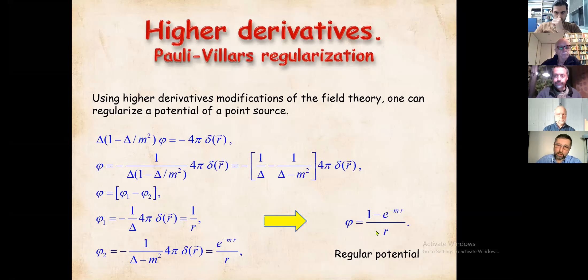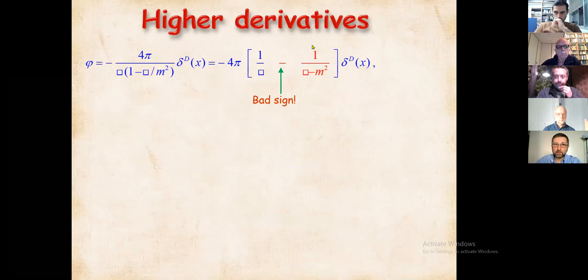We see that at r equal to zero this is regular, so there is hope to get rid of the singularity at the center, at least in Newtonian theory. This works pretty well, but if we go to Minkowski signature we get something similar but with a minus sign — and this minus sign is bad: it is a sign of ghosts.